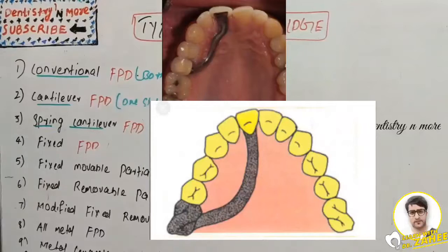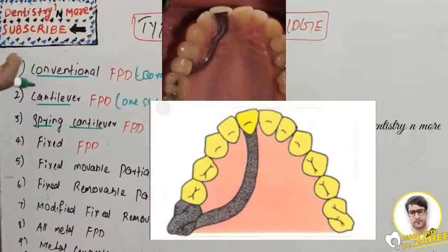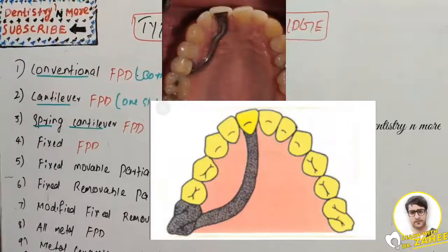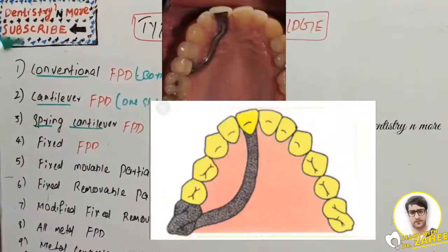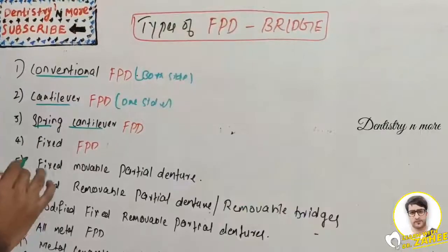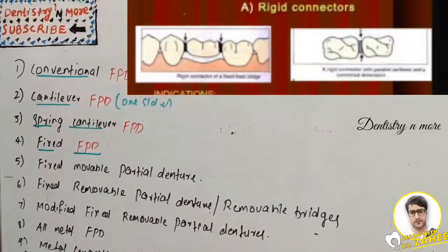The problem with spring cantilever FPD is the connector bar, which may interfere with speech and mastication. Deformation of the connector bar may produce coronal displacement of the pontic. There may also be food entrapment under the connector bar, which can lead to tissue hyperplasia on the palate.